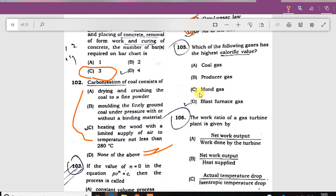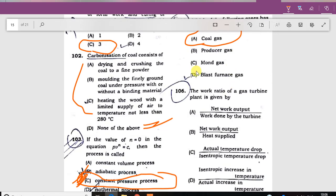Which of the following gas has the highest calorific value? The answer is coal gas. Coal gas has the highest calorific value, not blast furnace gas, producer gas needs to know.